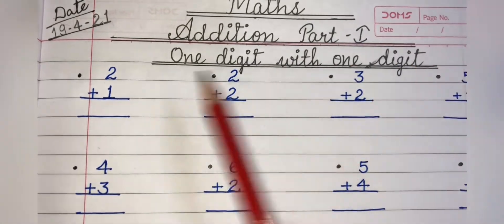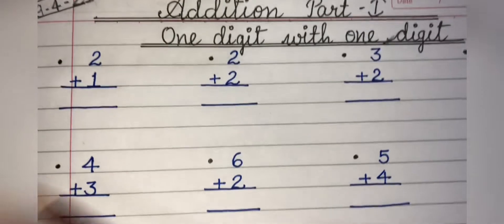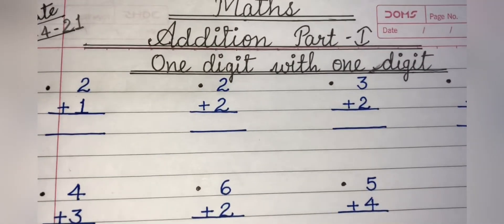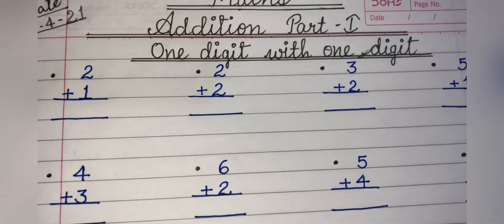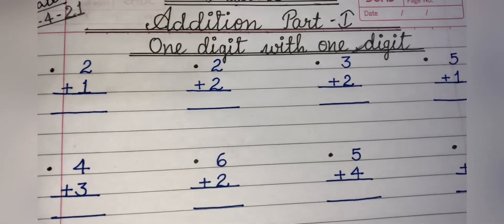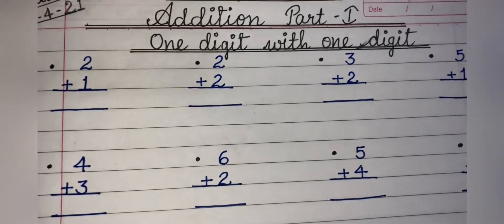We will be adding one digit with one digit today. As I know you have already studied edition, so again we will start from the basic. First we will do one digit, then two digit, then three digit. Like this we will go on.